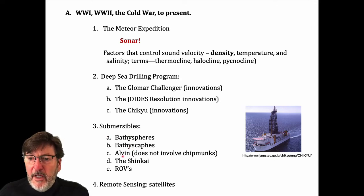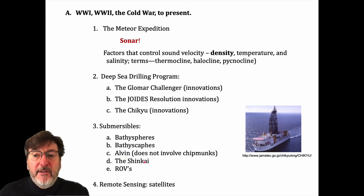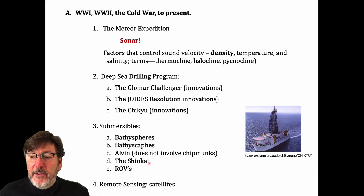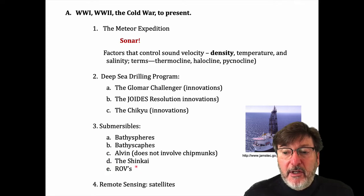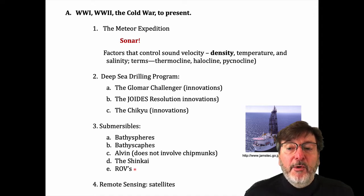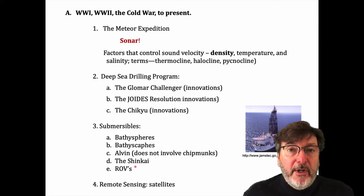From there, we discussed submersibles — bathyspheres, bathyscaphs — and then we spoke about Alvin, the famous submersible that has done so much work, including discovering hydrothermal vents on the seafloor. The Japanese Shinkai can actually go deeper than Alvin — Shinkai can go six kilometers. We started discussing ROVs, remotely operated vehicles, and the real innovations today in remotely operated vehicles and the advantages and disadvantages of those.